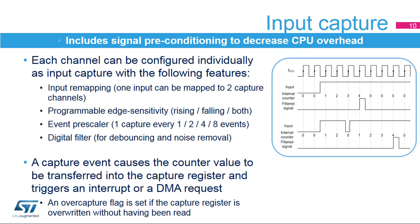Once the capture trigger is issued, the timer's counter is transferred into the capture register and an interrupt or DMA request can be issued. If a new capture occurs before the previous one had been read, the capture register is overwritten and an overcapture flag is set for the software to manage this condition.